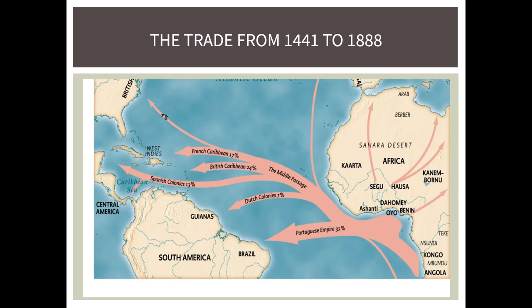After leaving one of the 20 principal slave ports, they were shipped across the Atlantic Ocean. Brazil and the Portuguese Empire received the majority of the slaves. The British Caribbean received the second most. While some slaves did come to North America, in reality it was only about 4%.